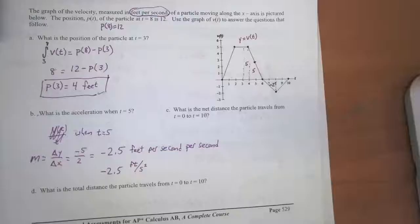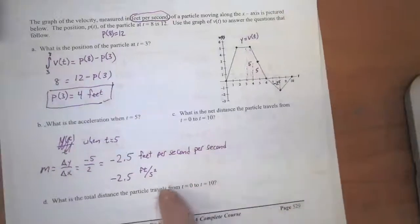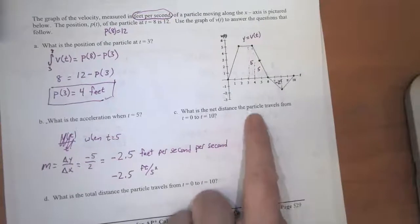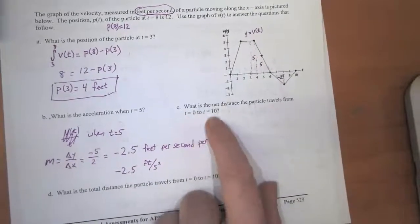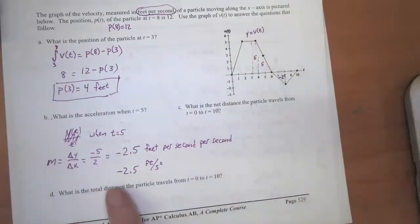So let's wrap up this problem. Part C and D they want to know the net distance the particle travels from 0 to 10 seconds, and then in Part D, they want to know the total distance the particle travels.